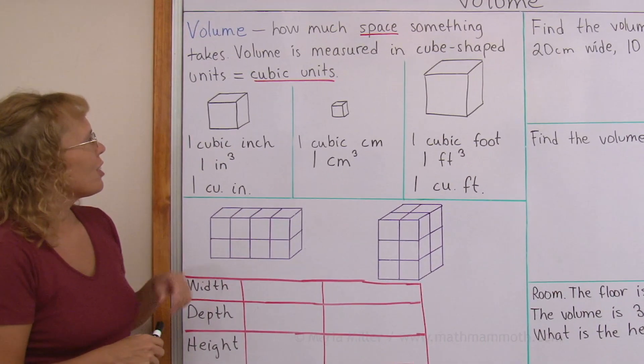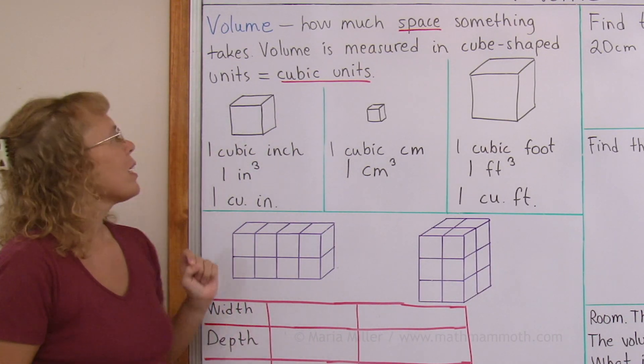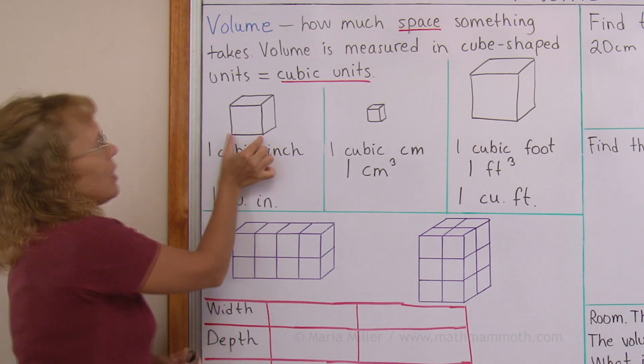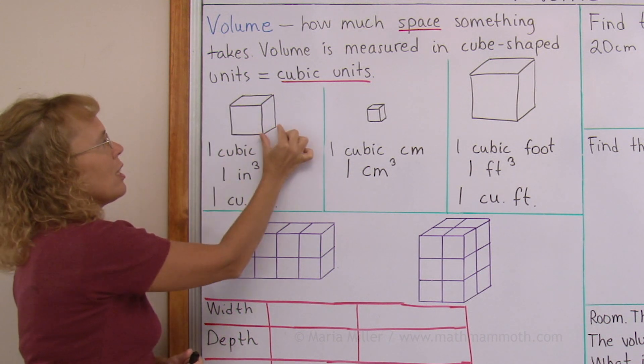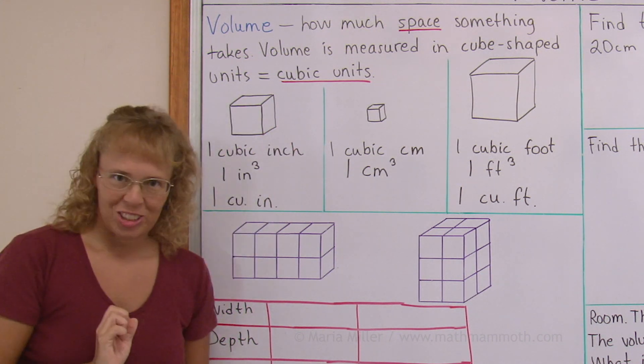I have here a few examples. Cubic units are always in the shape of a cube, and this little cube here is made so that its side here is one inch, and then this here the height would be one inch, and this way also one inch. And then we call it one cubic inch.